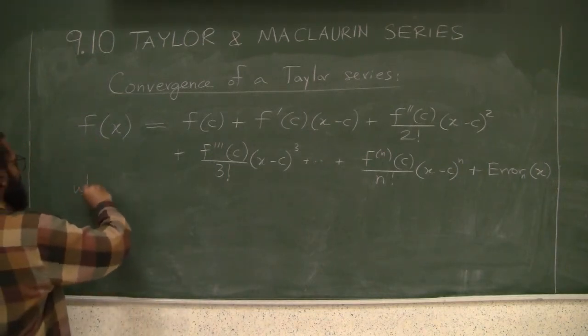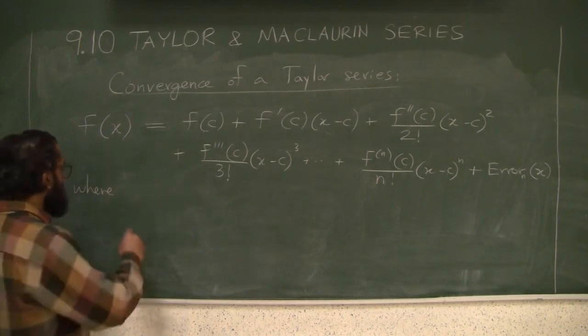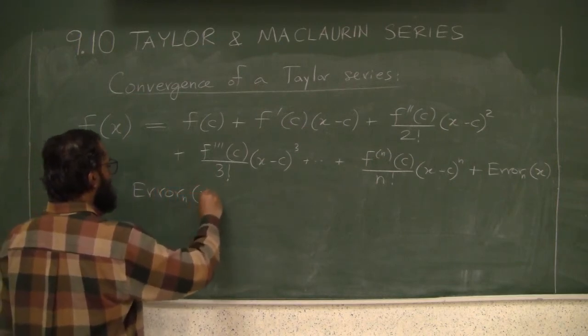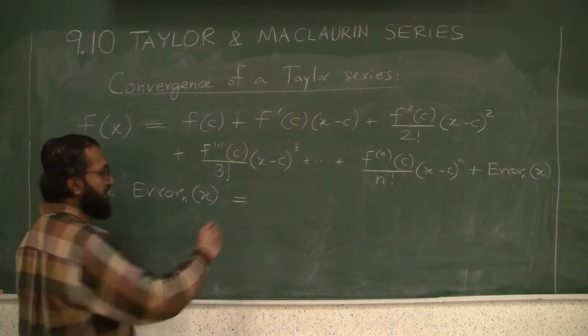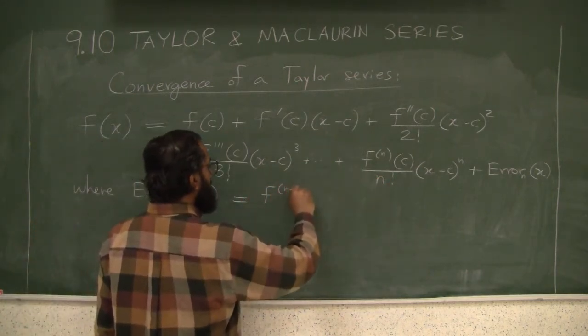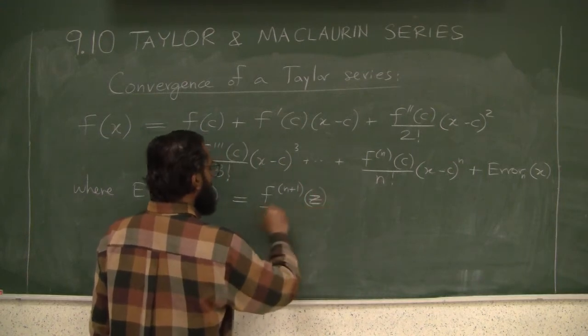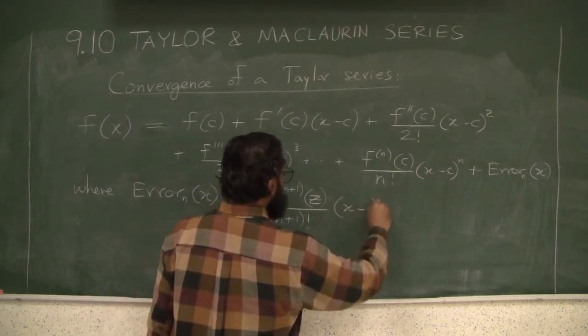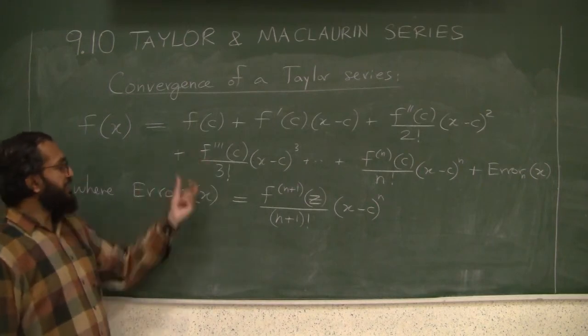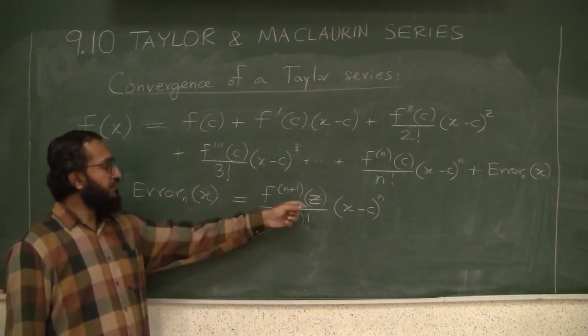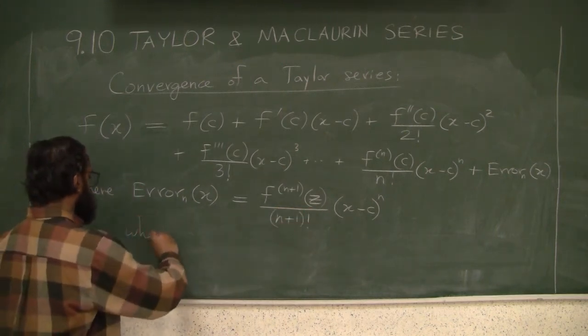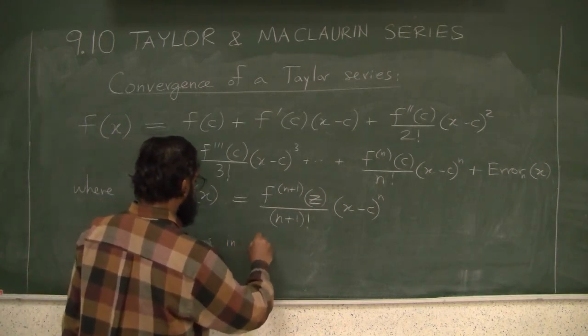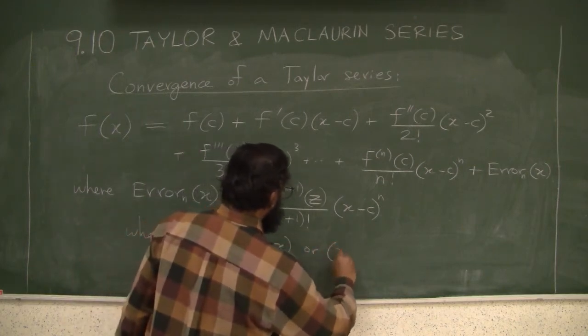We saw in the section of error polynomials that we have a theorem which tells us that this error term is exactly the next derivative - we stop at nth, so we have the n plus 1 derivative evaluated at z over n plus 1 factorial times x minus c to the power n plus 1. The error of the approximation at x would be the n plus 1 derivative at z.